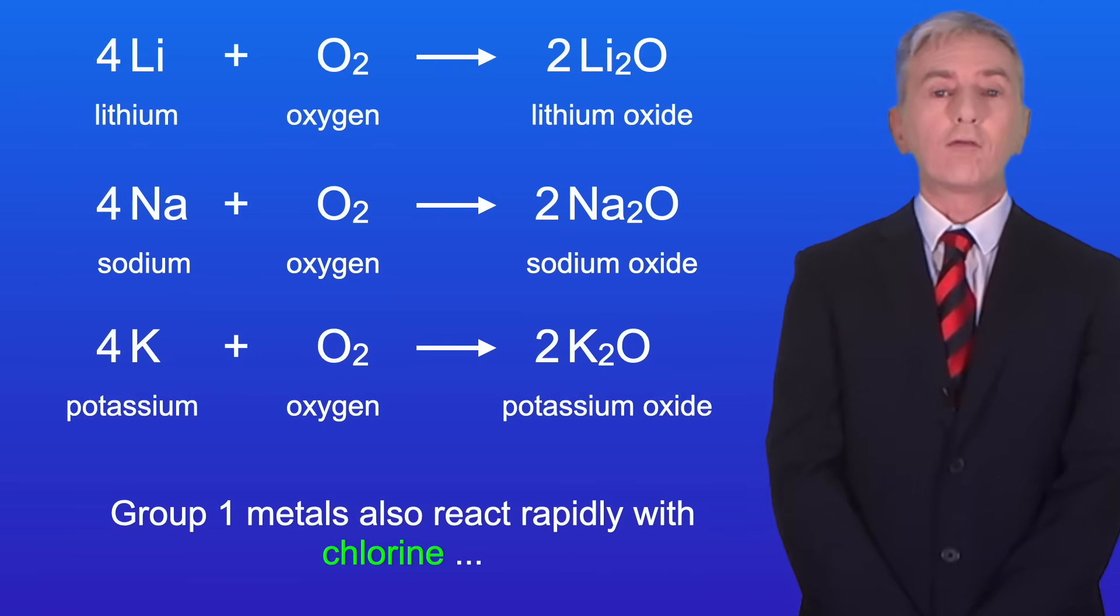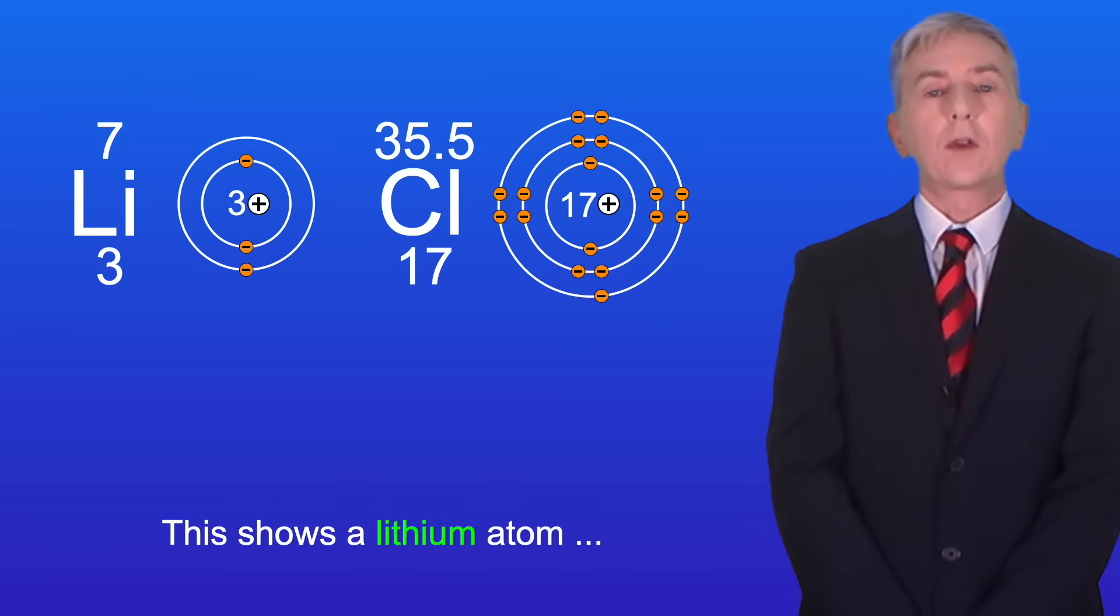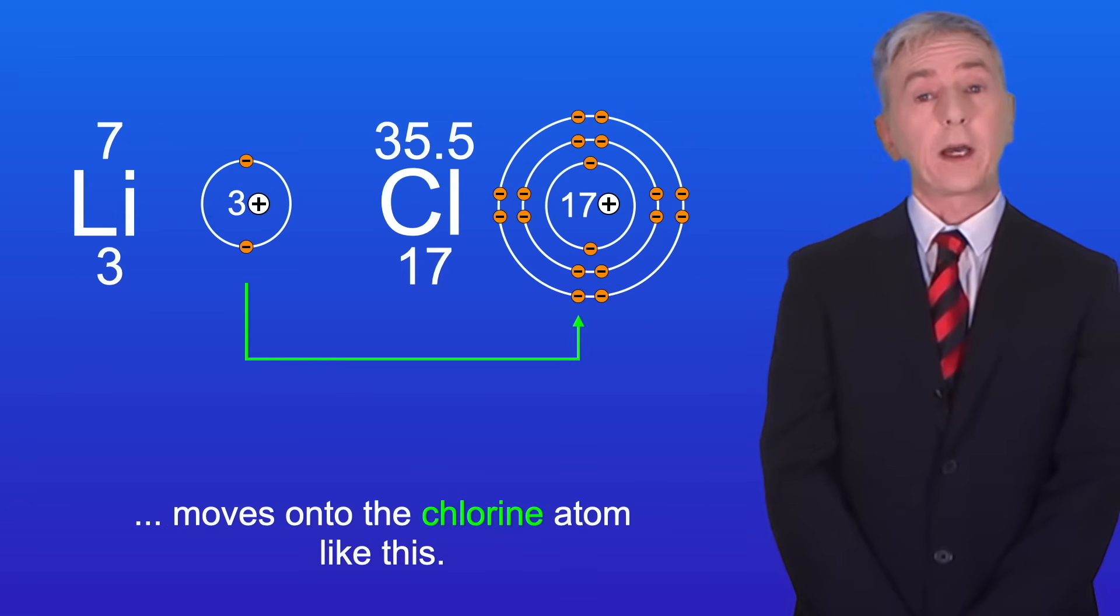Group 1 metals also react rapidly with chlorine, which is in group 7. This shows a lithium atom and a chlorine atom. When these react, the outer electron from the lithium atom moves onto the chlorine atom like this.